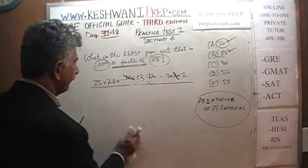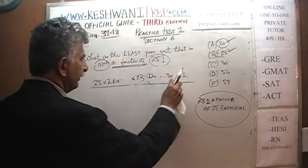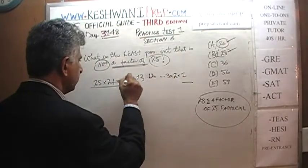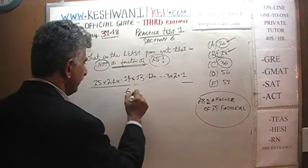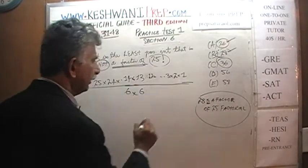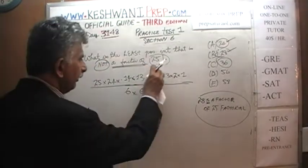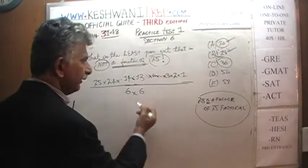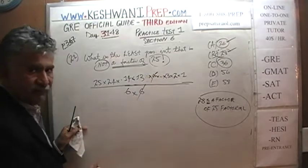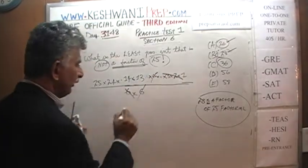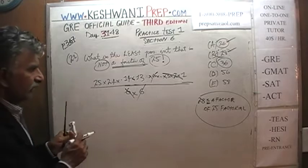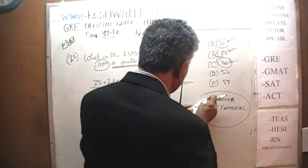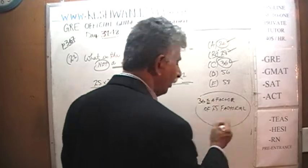Let's try 36. 36 can simply be written as 6 times 6. In the factorial we have 1 times 2 times 3 times 4 times 5 times 6, so one 6 cancels directly, and 2 times 3 gives another 6 that cancels with the second one. It goes evenly into it. So 36 is a factor of 25 factorial.